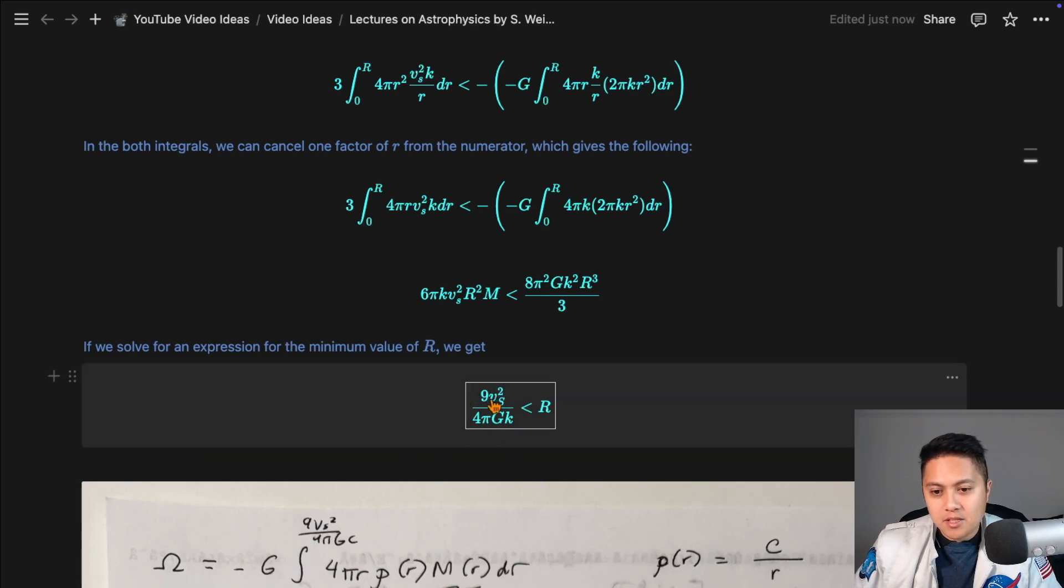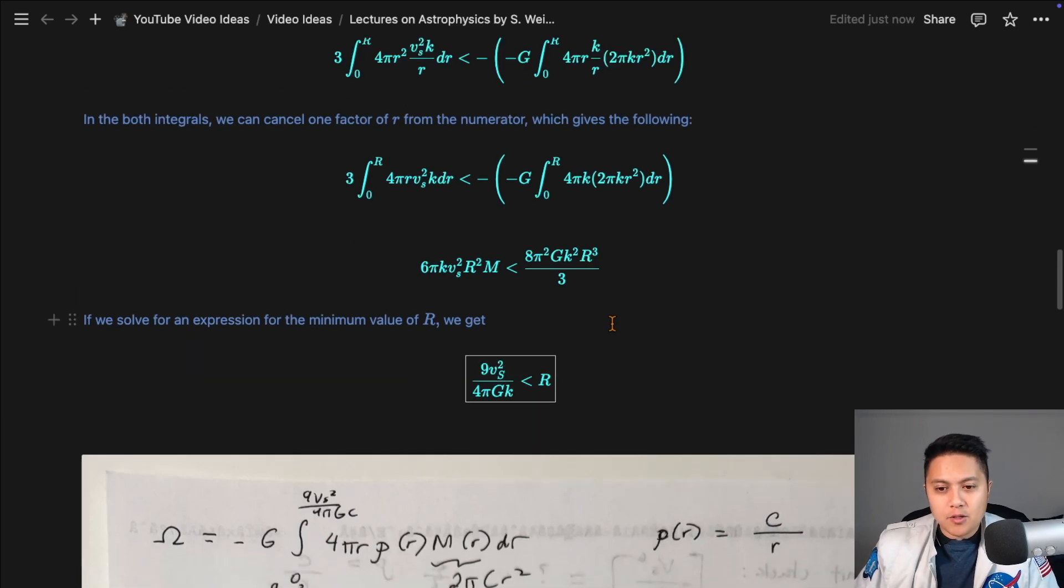And if you carry out this integration and do the algebra, you'll find that the minimum value of R should satisfy this expression. So it's 9 fourths the speed of sound squared divided by pi g k, where k is the constant. So this is the answer here.